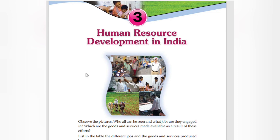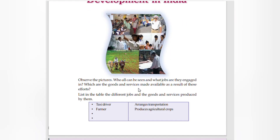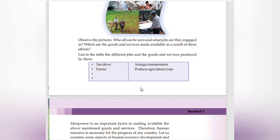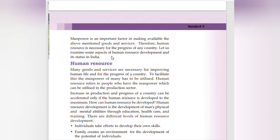Hello dear students, welcome to Teacher at Home. Today's class is on the third chapter: Human Resource Development in India. Observe the picture — what jobs are these people engaged in, and what goods and services are made available as a result? For example, a taxi driver arranges transportation and a farmer produces agricultural crops. Manpower is an important factor in making available these goods and services.